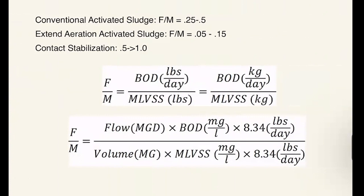So these are some typical F-to-M ratios for different types of activated sludge. A conventional activated sludge plant will have an F-to-M ratio of 0.25 to 0.5. An extended aeration activated sludge plant will have an F-to-M ratio of 0.05 to 0.15, because it has lower loading rates, while a contact stabilization process will have an F-to-M ratio of 0.5 to 1, because it's a sped-up process that can handle much higher loading rates.